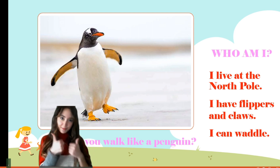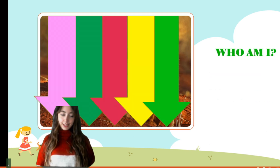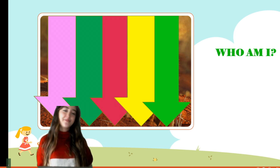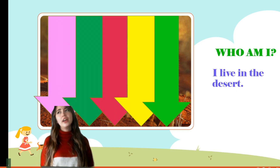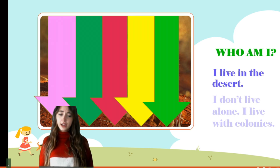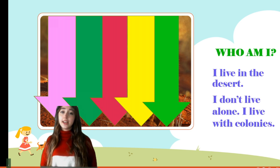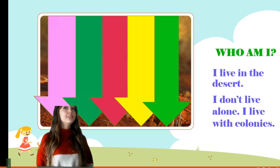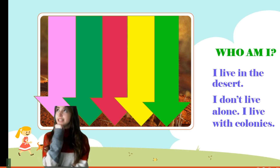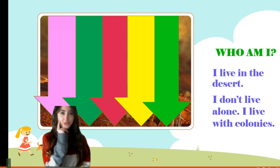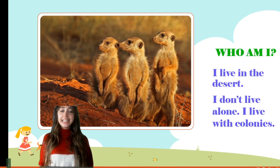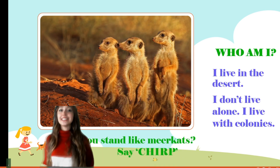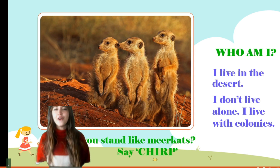Good job! Let's continue with the next animal — this one is a bit harder. Who am I? I live in the desert, so it must be very hot and dry. I don't live alone; I live in colonies. So it must be a social animal that lives in the desert. Did you find it? Look, they are meerkats! Can you stand like them?